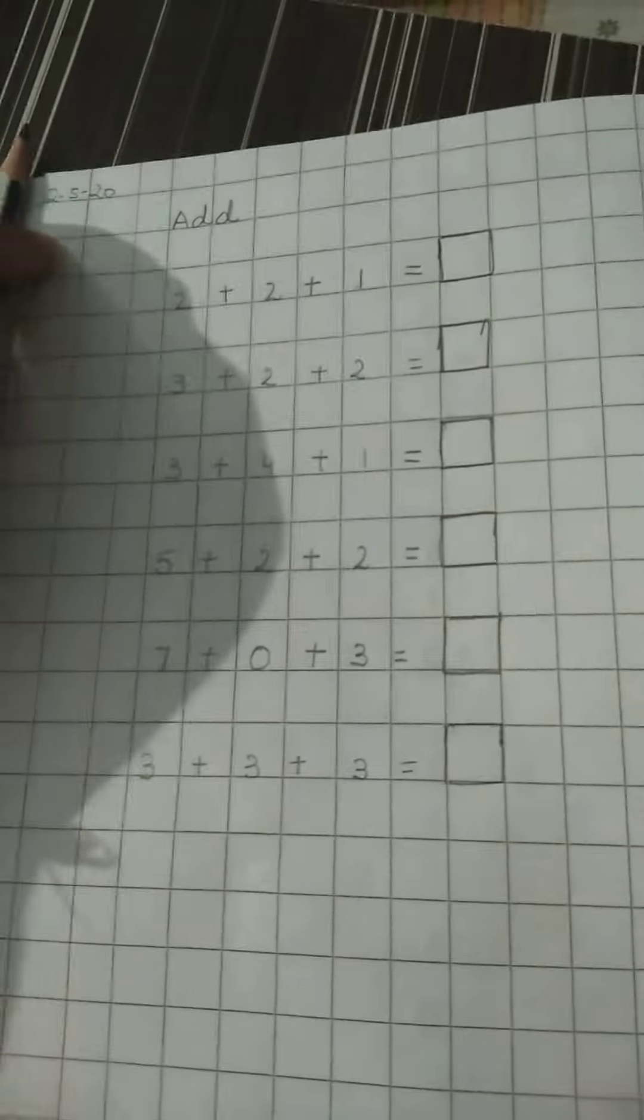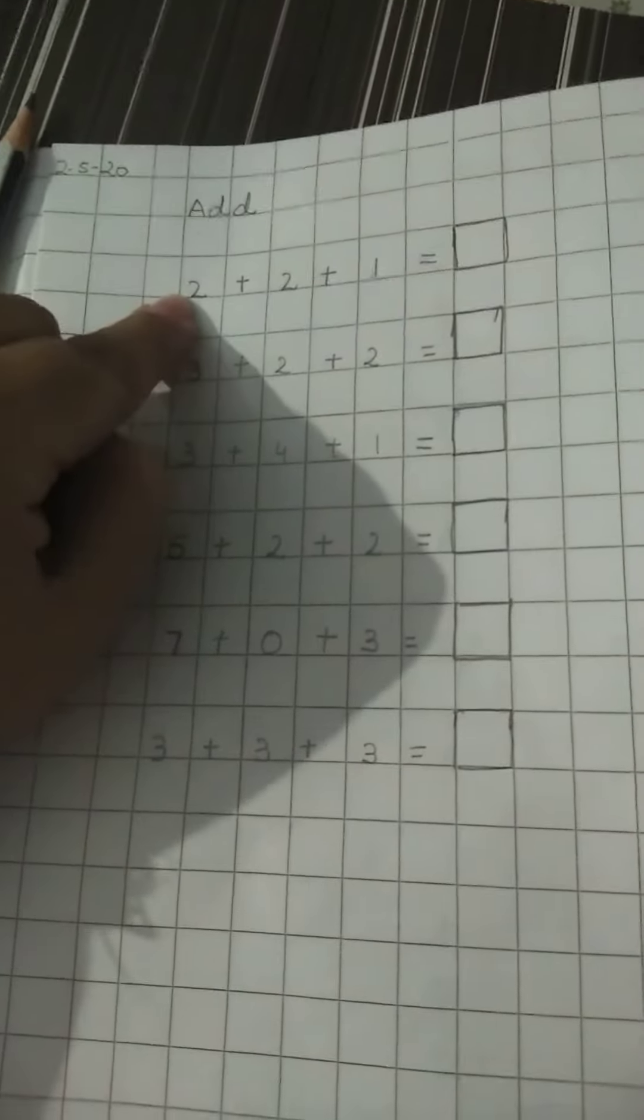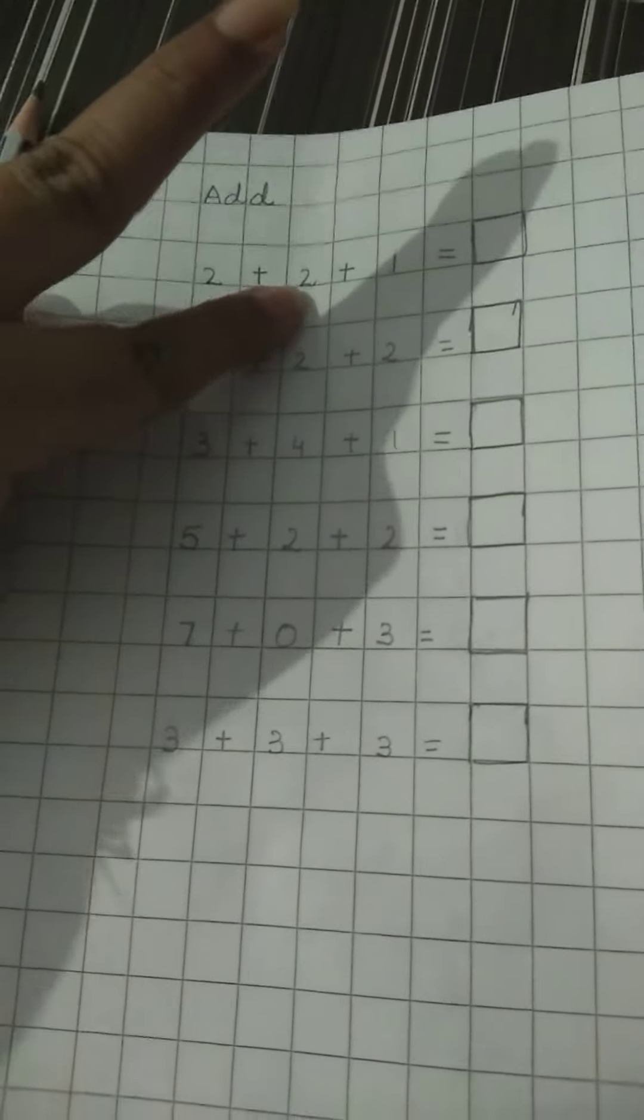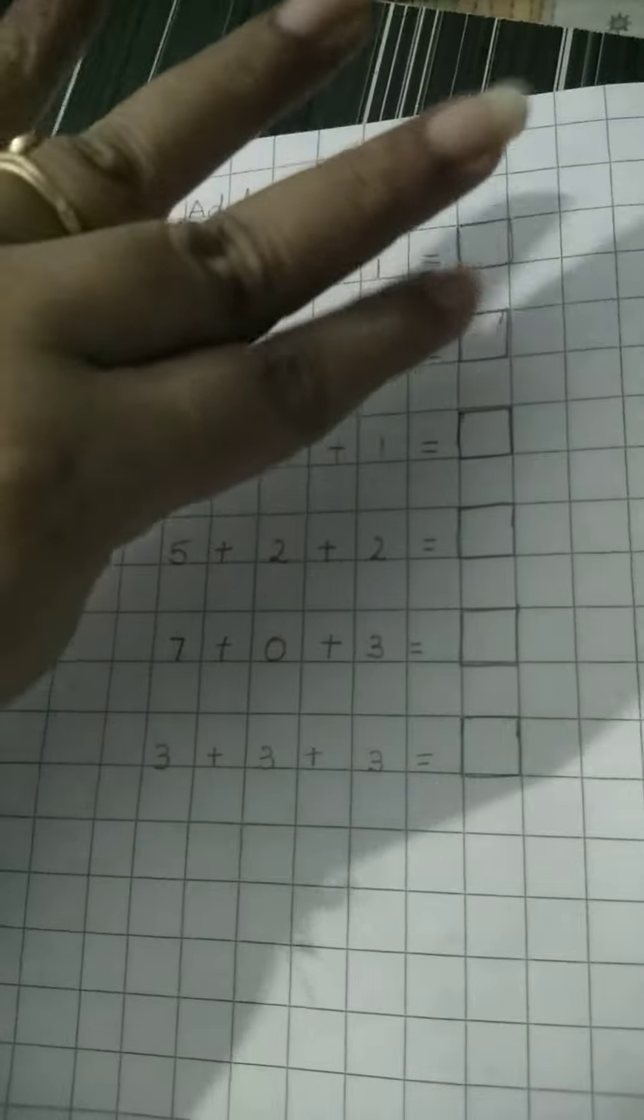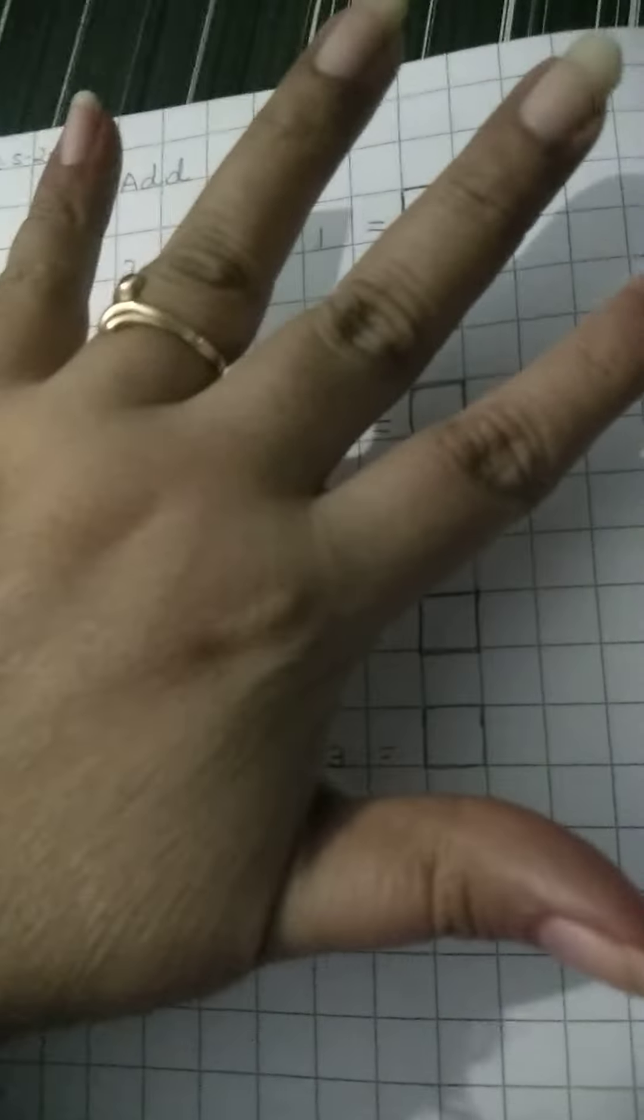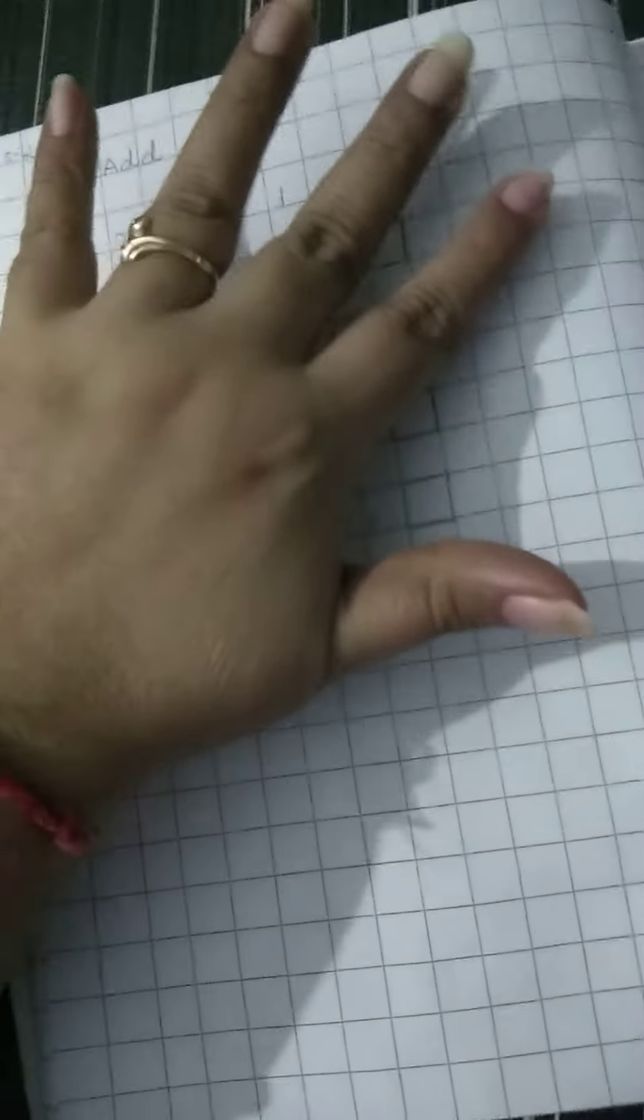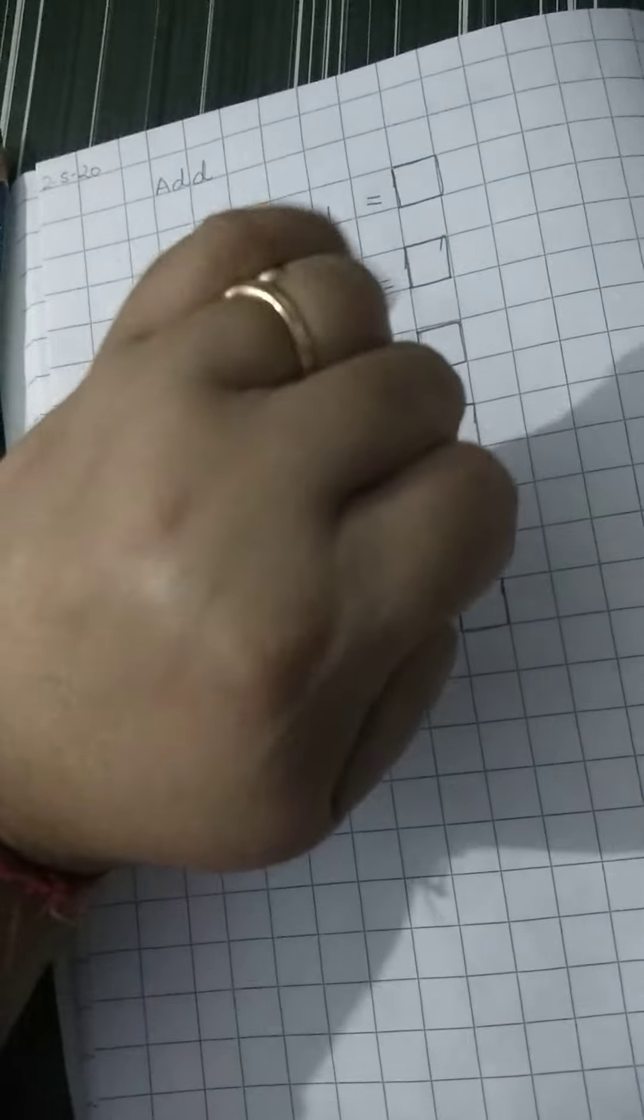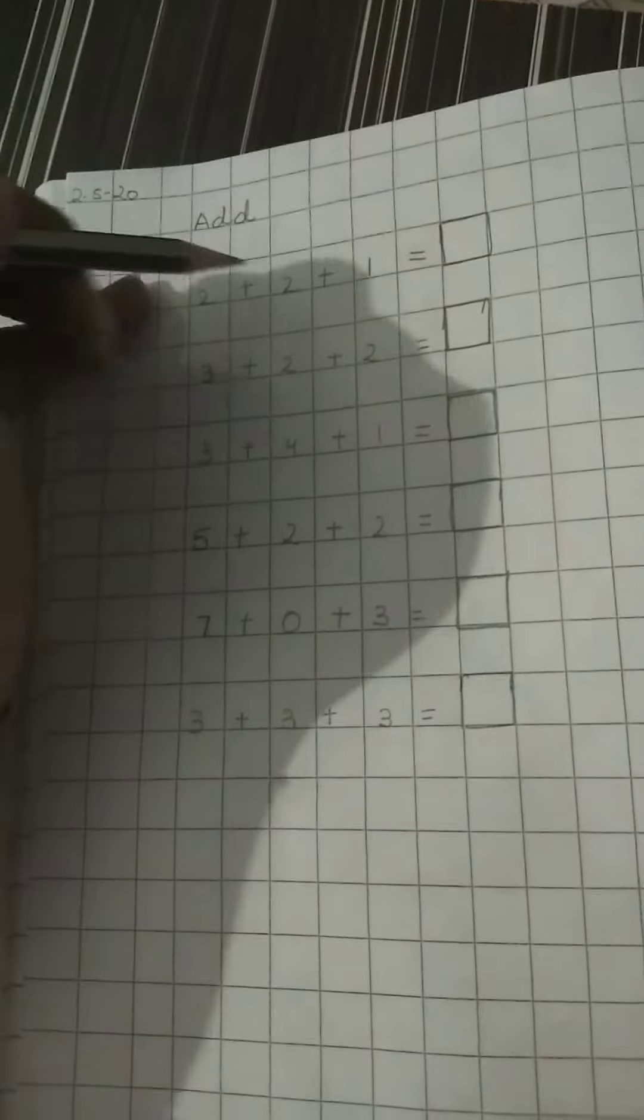Again we will count with the help of our fingers. The first digit is 2. 1, 2. Then again 2. 1, 2. Now 1. Now can you all count? 1, 2, 3, 4, 5. So 2 plus 2 plus 1 is 5.